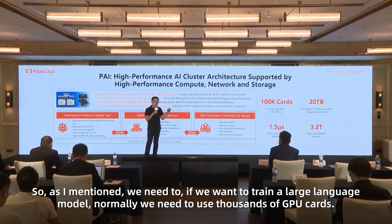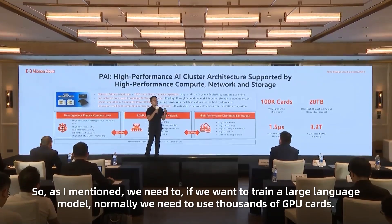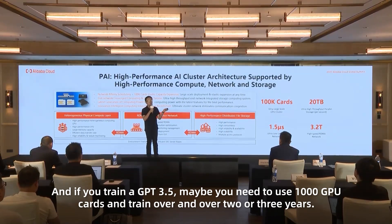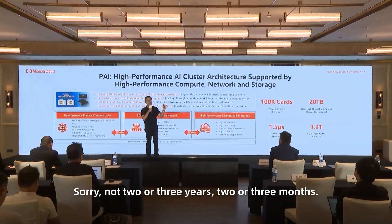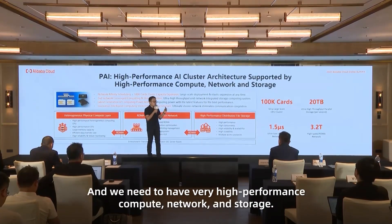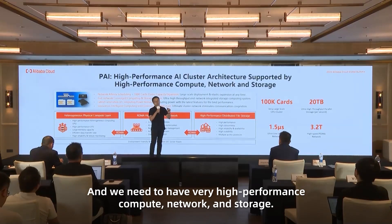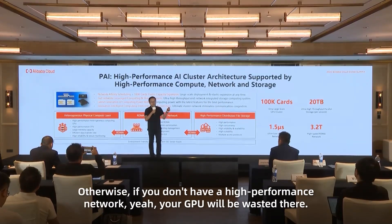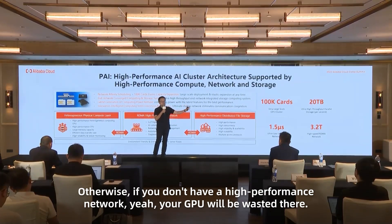To train a large language model, you normally need to use thousands of GPU cards. If you train a GPT-3.5-scale model, you might need 1,000 GPU cards running for two or three months. We need very high-performance compute, network, and storage working together efficiently — otherwise, without a high-performance network, your GPUs will be wasted.